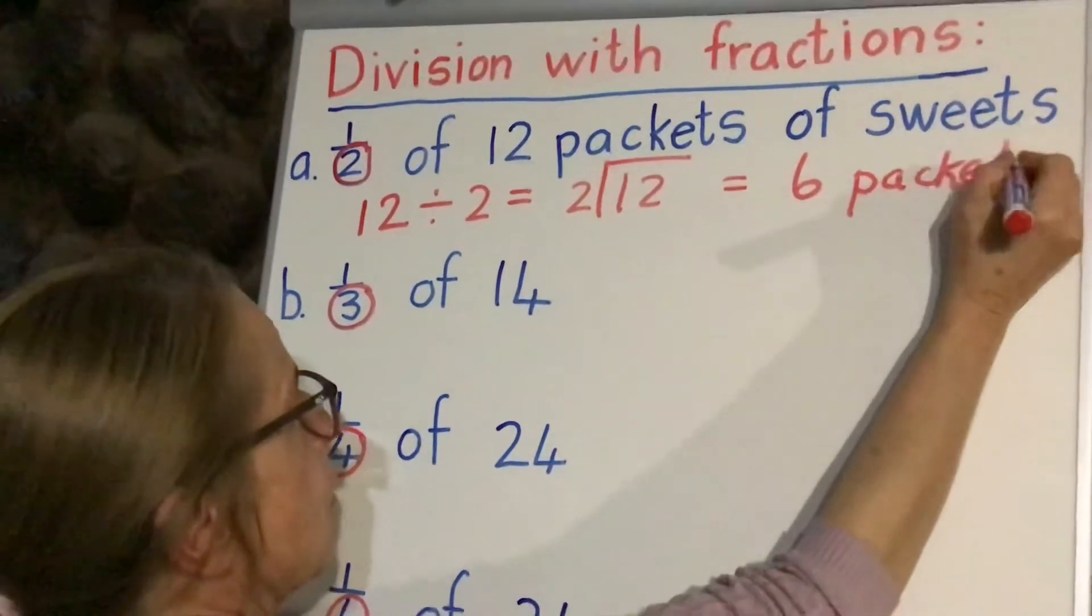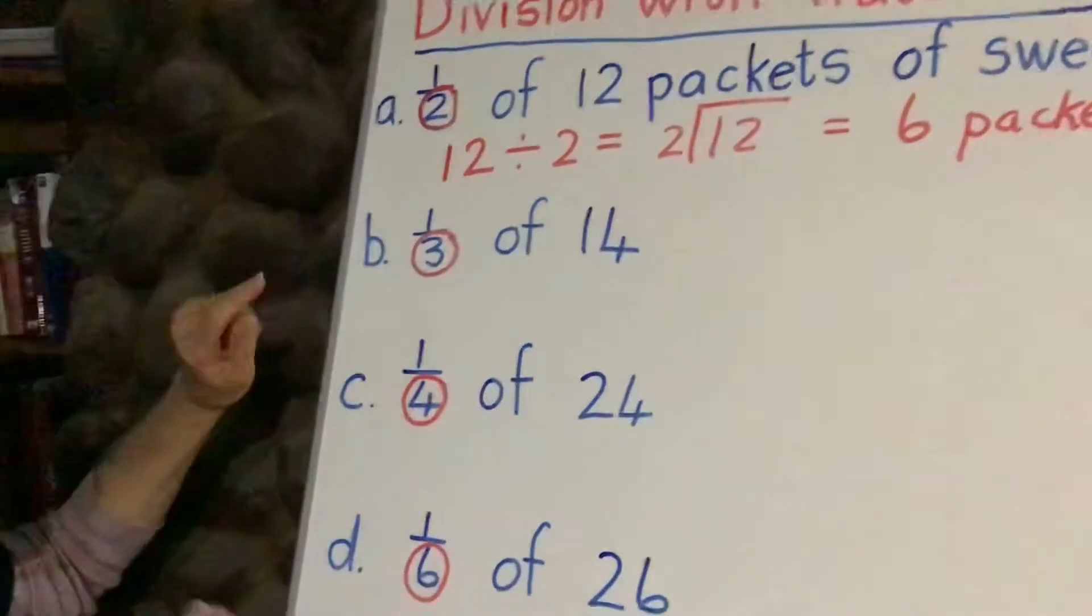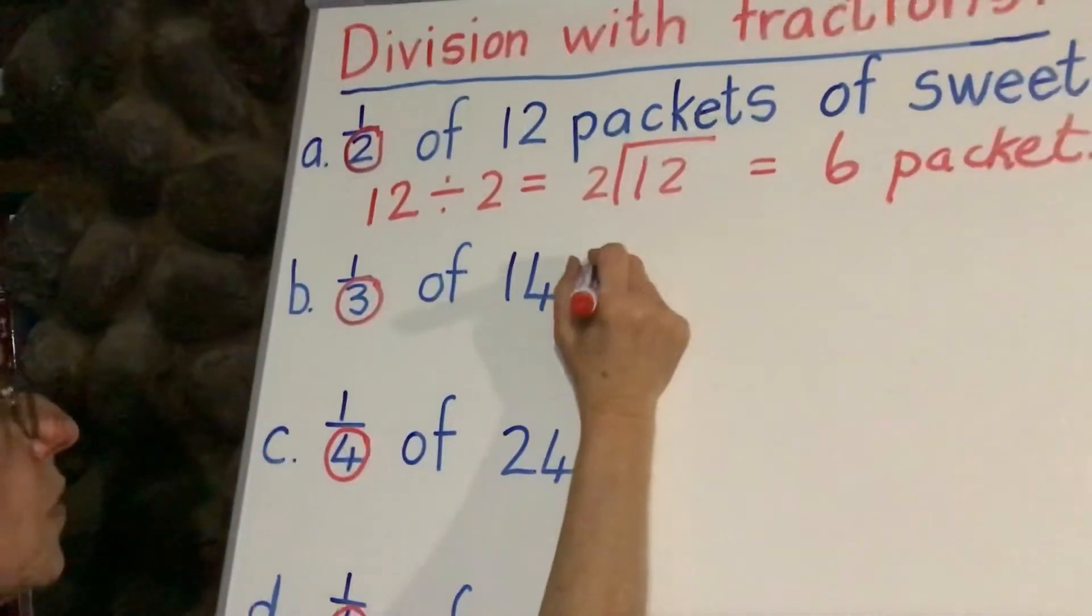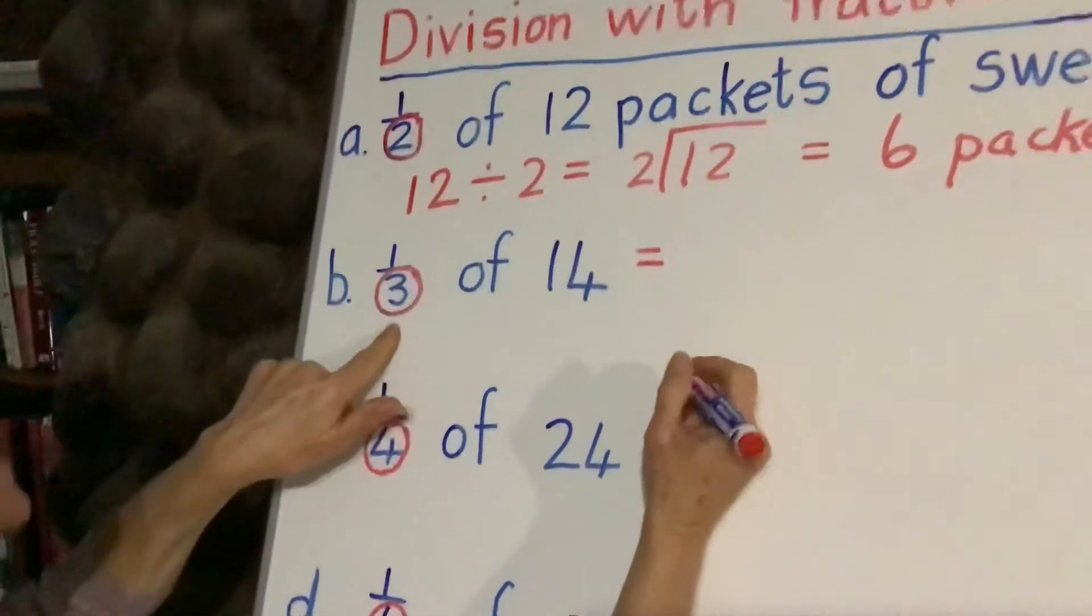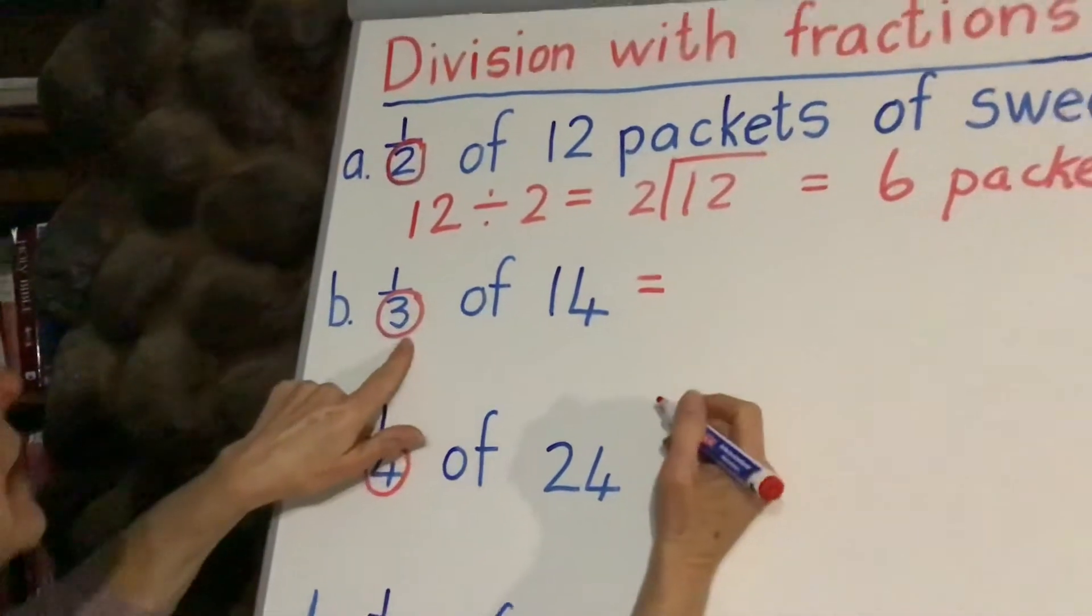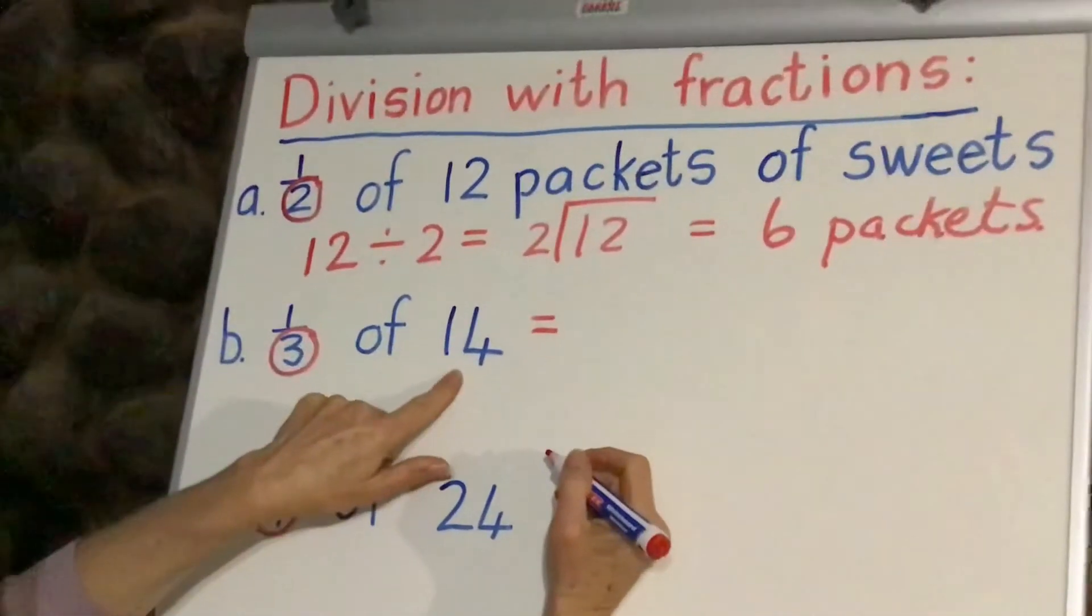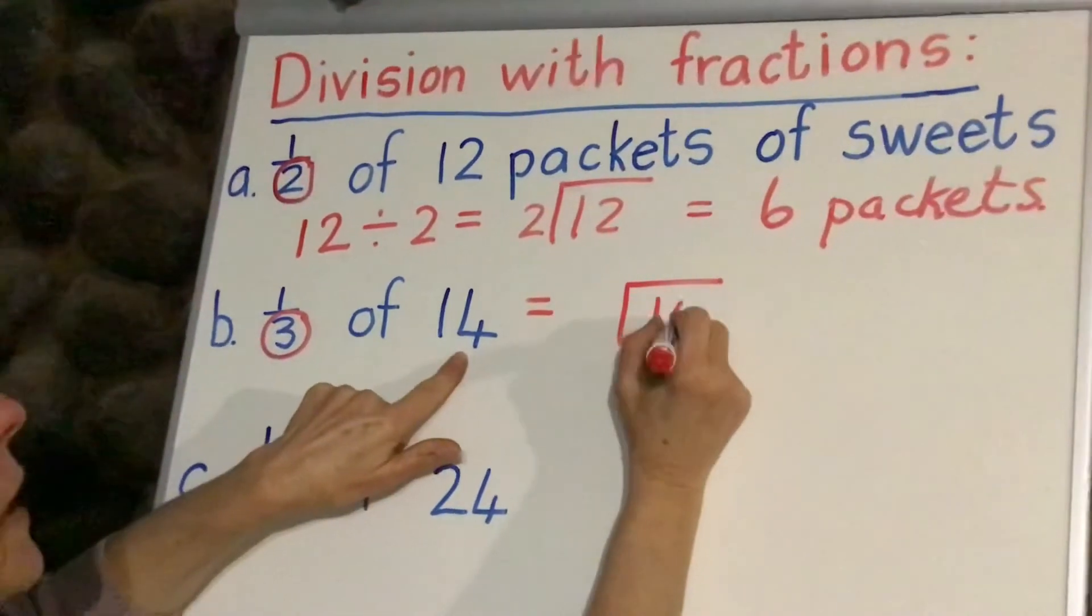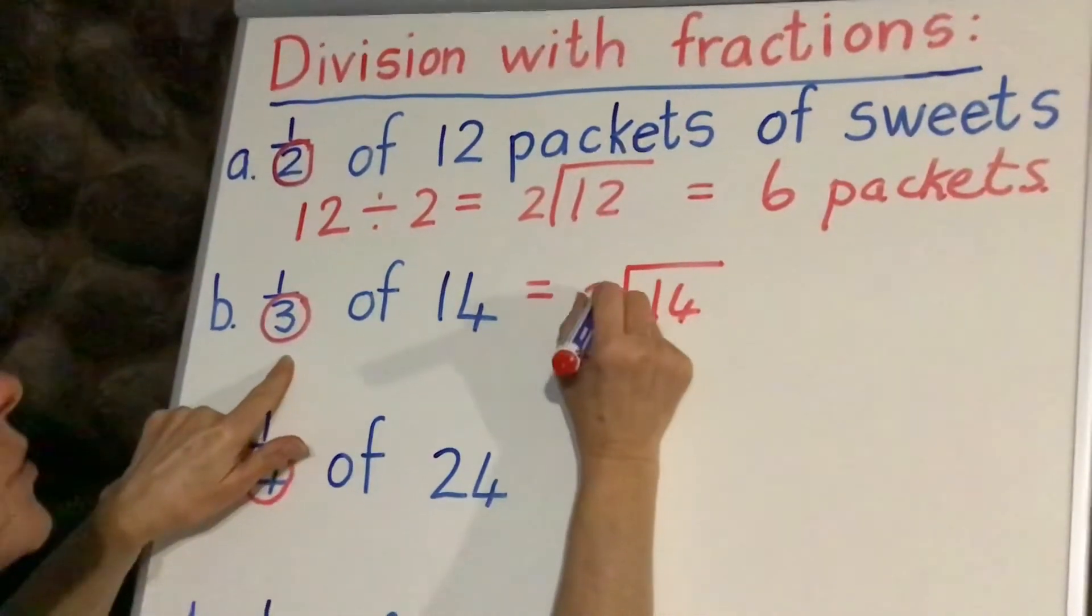Now let us go to the next one, because when we're doing fractions and you have a remainder, there's a special way we have to do this. We are dividing by three again, a third of 14 packets of sweets. So let's make our little division sum, 14 in the box and we're going to put three children out there.